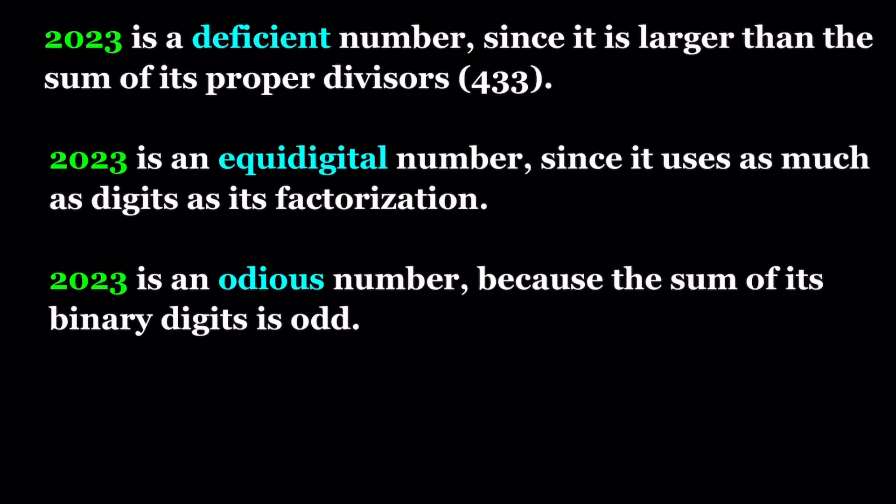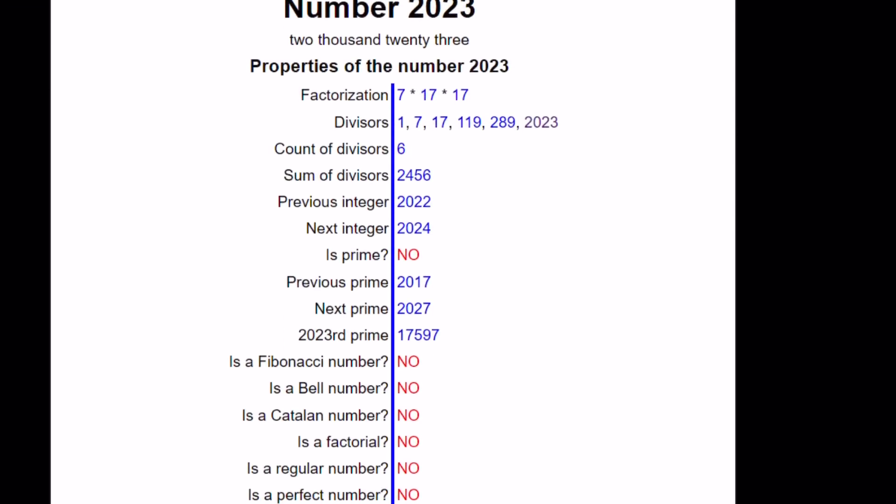Let's proceed a little further and take a look at more details. 2023 can be factored into 7 times 17 times 17, so it's divisible by 289, which is a perfect square. In other words, it's also 7 times 289. Its divisors are as follows. There are 6 divisors. Their sum is 2,456. But if you subtract the number itself from it, the rest are the sum of the proper divisors, which makes it a deficient number.